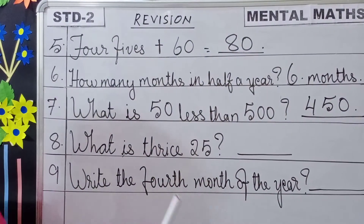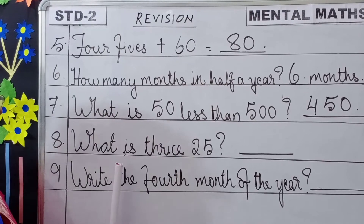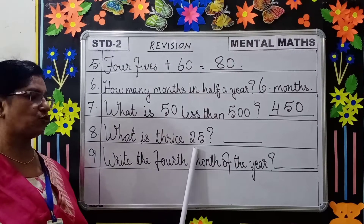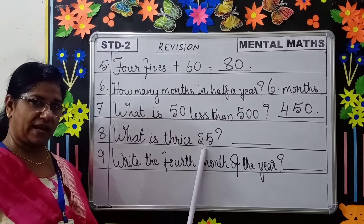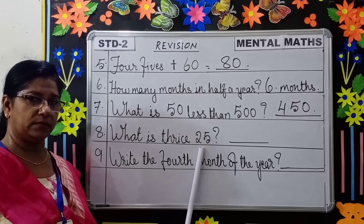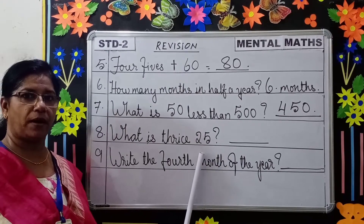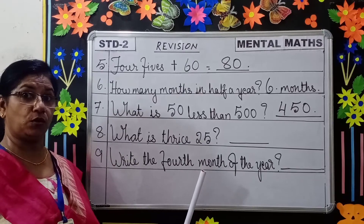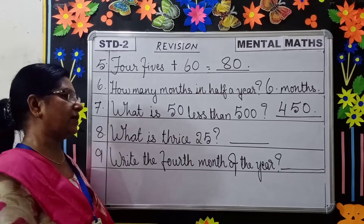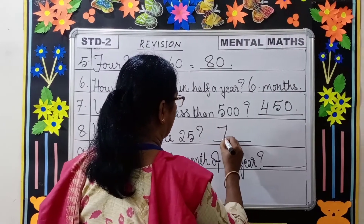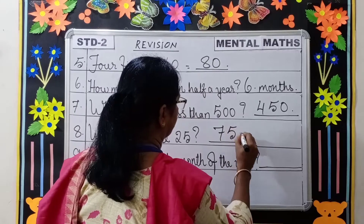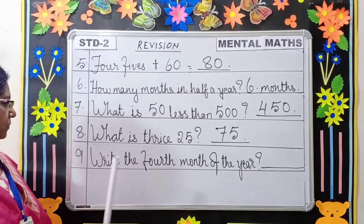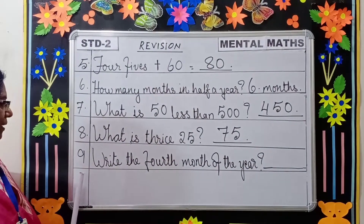Next question, question number 8: What is thrice 25? What is thrice, children? 3 times. 25 plus 25 plus 25 is equal to 75. Thrice means 3 times.